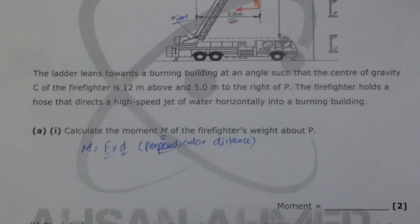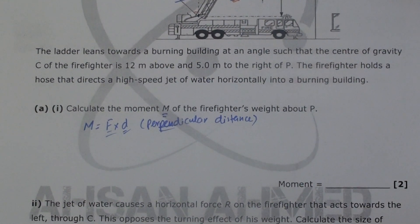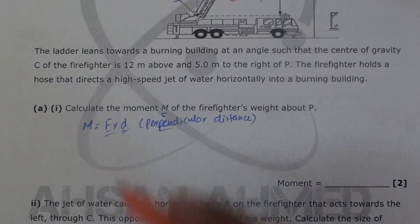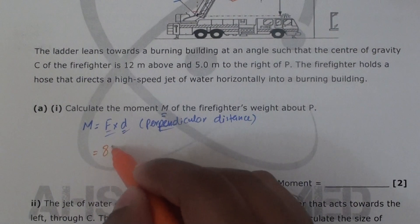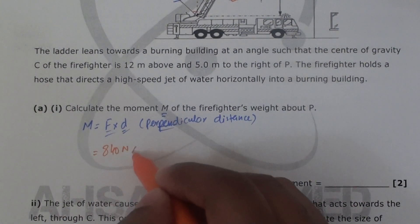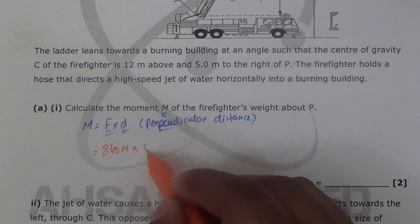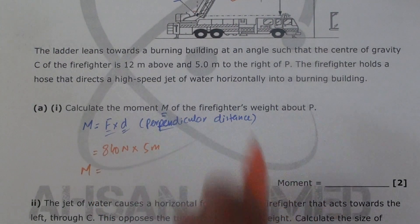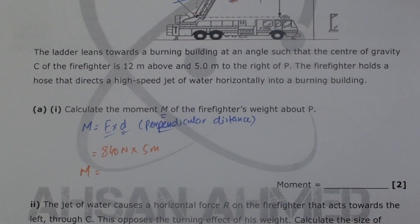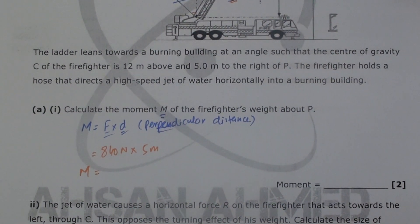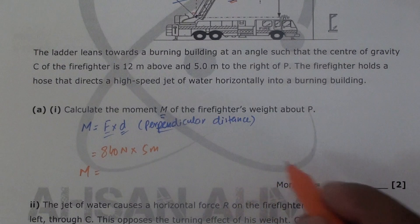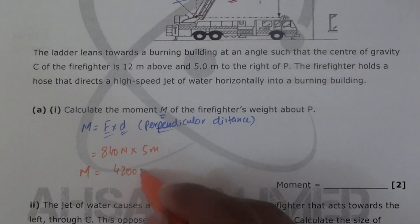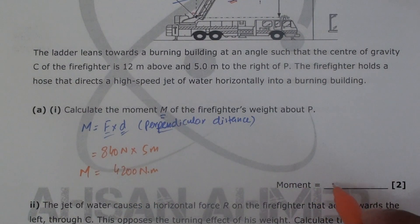Applying the values in the formula: force is 840 newtons multiplied by the perpendicular distance of 5 meters. Calculating that gives 840 times 5, which equals 4200 Newton meters. So the moment M about P is 4200 Nm.